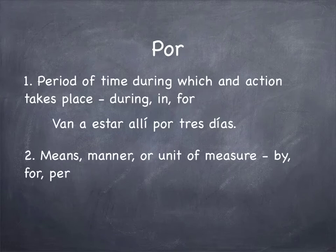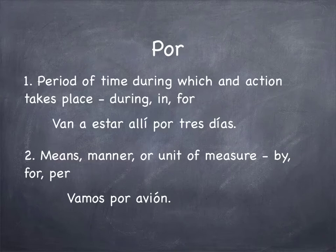The second use of por is when we refer to means, manner, or unit of measure. In English, it would be the equivalent of by, for, or per. For example: vamos por avión, which means we're traveling by airplane.